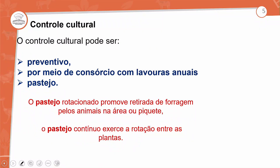O controle cultural pode ser preventivo por meio de consórcio com lavouras naturais ou pastejo. O pastejo rotacionado promove retirada de forragem pelos animais nas áreas ou piquetes. O pastejo contínuo exerce uma rotação entre as plantas. Temos o pastejo rotacionado e o pastejo contínuo como formas de controle preventivo por rotação de culturas, consórcio ou pastejo.